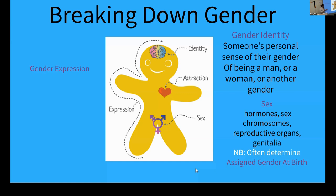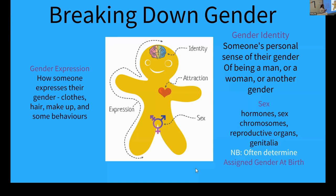Gender identity is separate from sex — it is the mental and emotional way that someone identifies: as a woman, as a man, or perhaps non-binary or any of the other terms we'll come across soon. Gender expression is how someone expresses their gender through clothing, makeup, hair, hairstyles, hair colors, and even some behaviors.